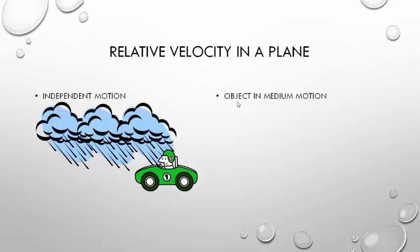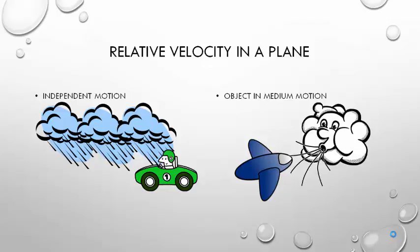Second one is object in medium motion. When any object is affected by the motion of the medium, then that is the relative velocity of object in medium motion. For example, the resultant velocity of an aircraft is affected by the presence of the wind blowing and the direction of the wind as well.